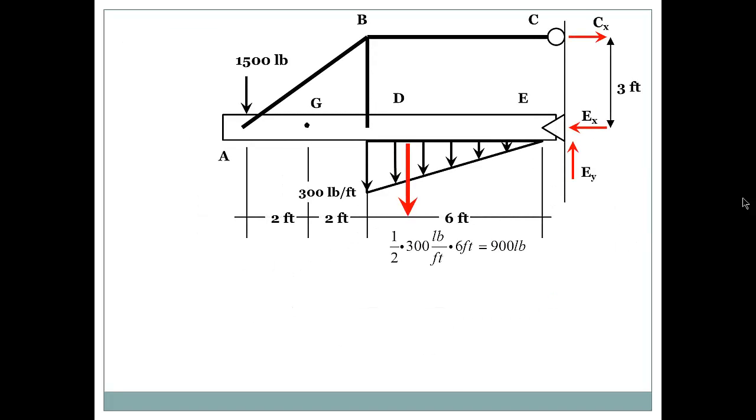So what do we do now? Basically, we go ahead and do the summation of the forces in the x direction. And we get CX minus EX equals 0. And when we do the summation of the forces in the y direction, we get minus 1500 minus 900 plus EY equals to 0. And from that we can solve for EY to be 2400.